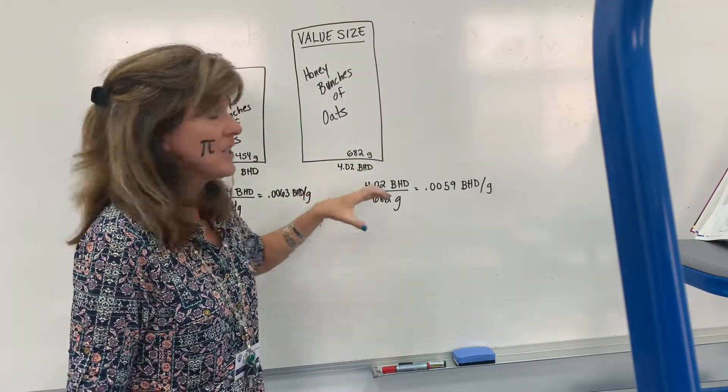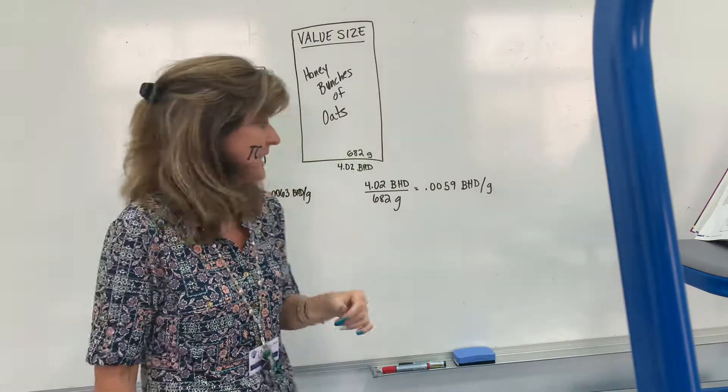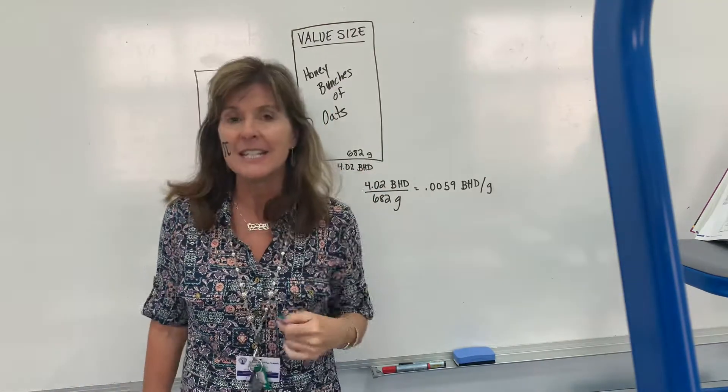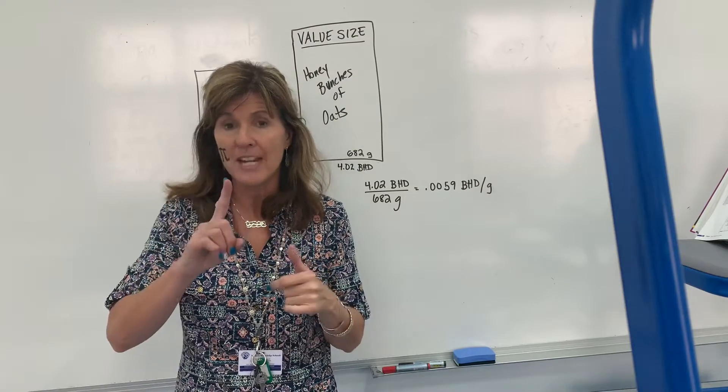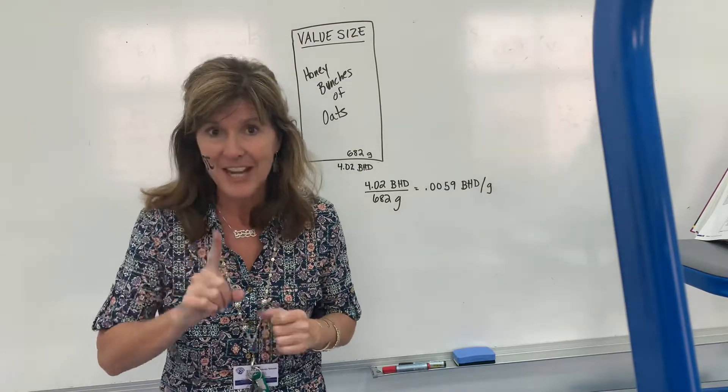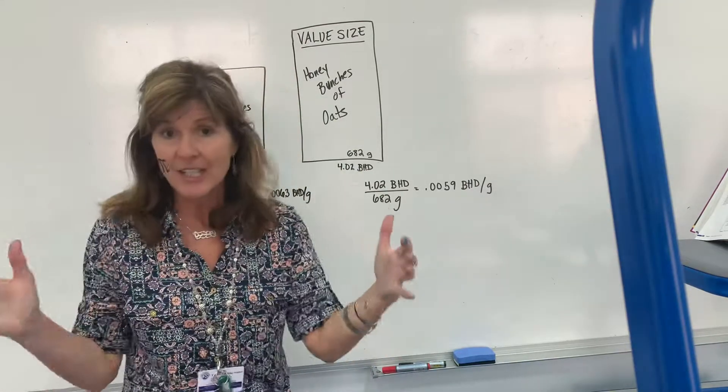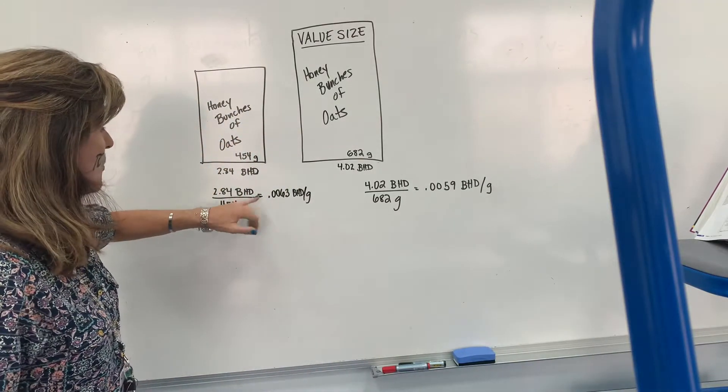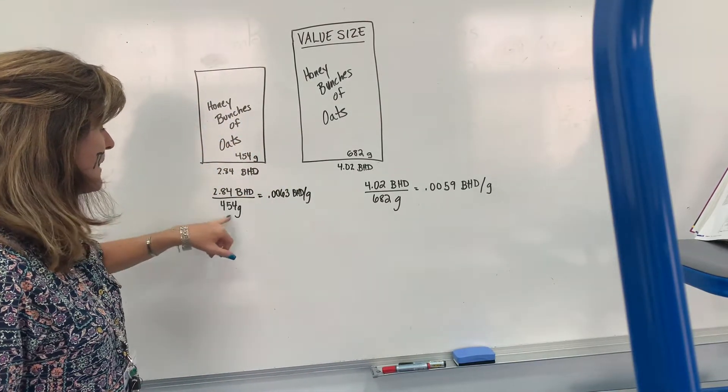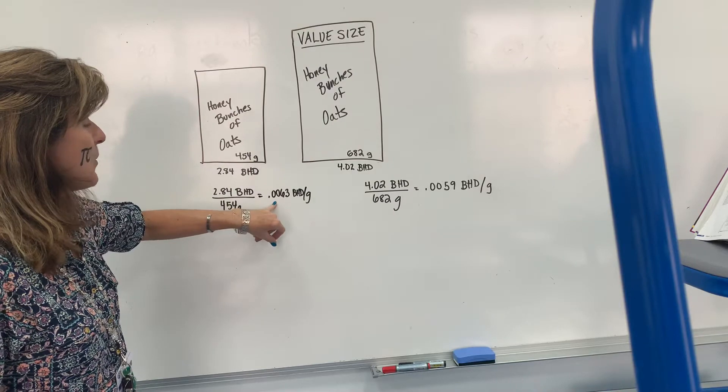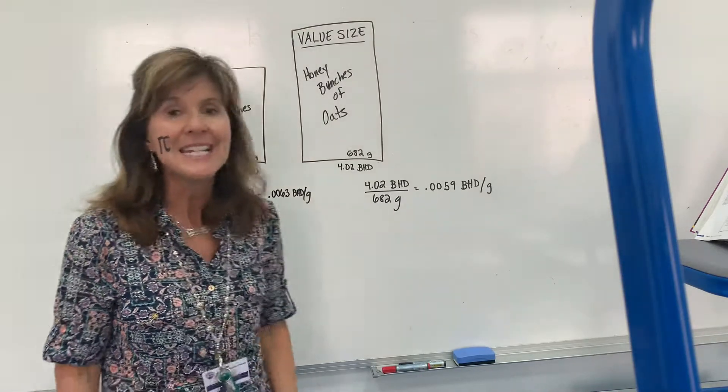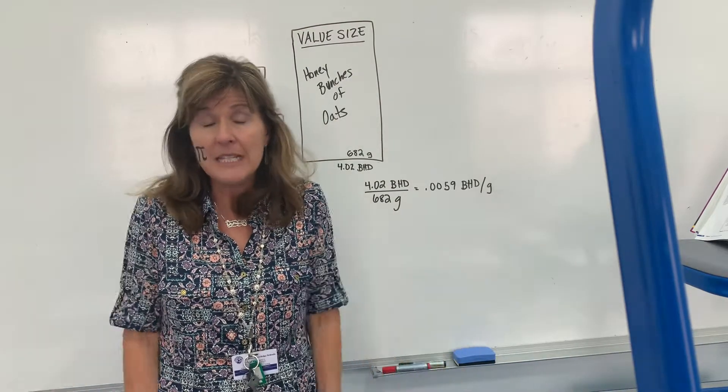I want to know how many BDs I'm spending to get one gram, so I want the denominator to be one. Just a division problem. So on my calculator, 2.84 divided by 454 is 0.0063 BDs per gram. That's great. I don't know what that means, but it doesn't matter until I compare it to something, and it's going to give it more context.